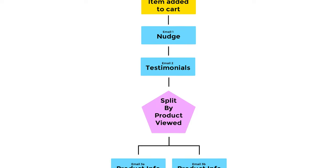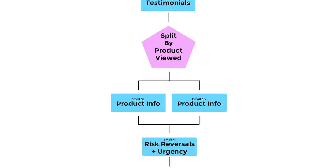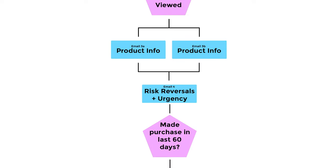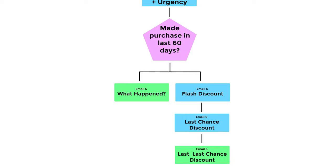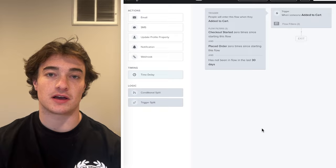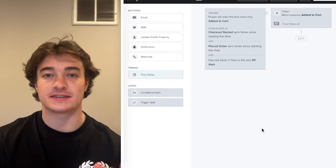The more advanced layout generates two to three times more sales. It's the same sort of deal, but we're mixing in splits based on product and introducing text-based emails. We start with reminders and social proof, then split based on what item the person abandoned — so if someone abandons a pair of pants, they're not getting testimonials about a t-shirt. Then we add urgency and a flash discount at the end, making sure we're not sending that to someone who's recently purchased.